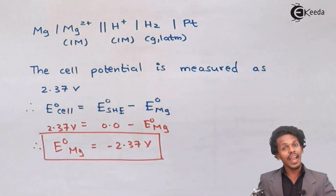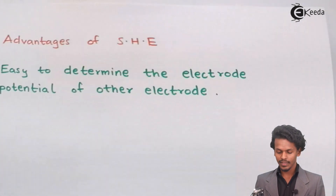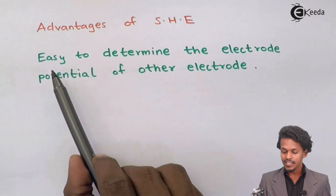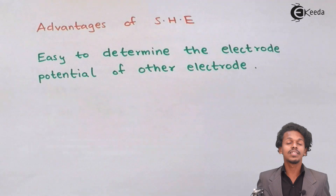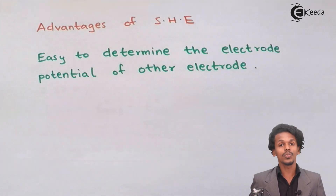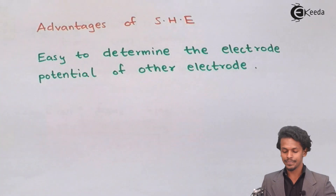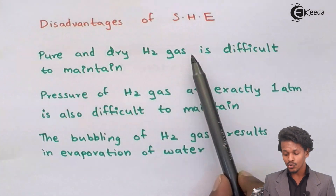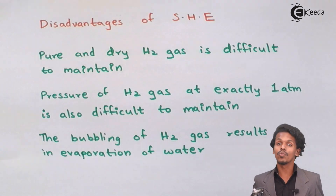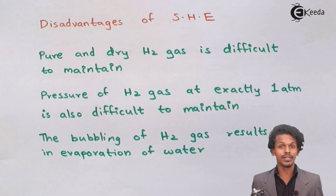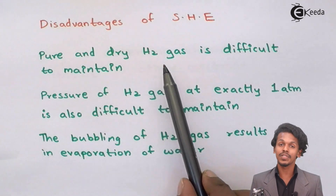The advantages of SHE: it is easy to determine the electrode potential of any other electrode by connecting it with SHE. However, there are also disadvantages. Pure and dry H₂ gas is difficult to maintain — if it is not maintained, the cell potential will not remain at zero and will deviate, so using pure dry H₂ gas plays a very important role.